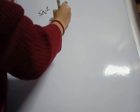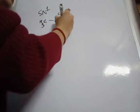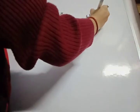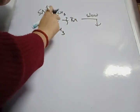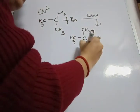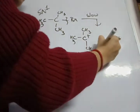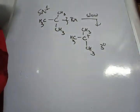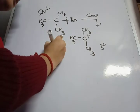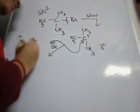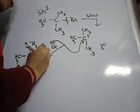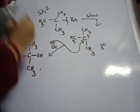Taking a tertiary alkyl halide as an example: in the first slow step (RDS), the C–Br bond undergoes heterolytic fission to give Br⁻ and a tertiary carbocation. This tertiary carbocation is stabilized by the +I effect and hyperconjugation. In the second fast step, the incoming nucleophile OH⁻ attacks the carbocation to give tertiary butyl alcohol.